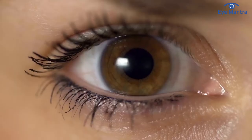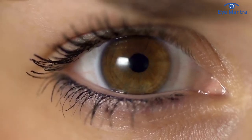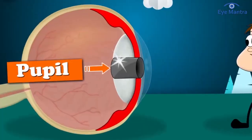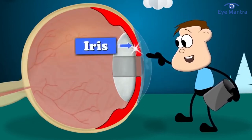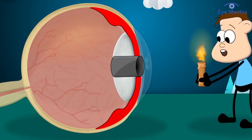Have you ever wondered why your pupil dilates? The pupil is the black and round part of our eye that exists in the center, which reacts or changes its size according to the amount of light entering the eye. The size of your pupil is controlled by tiny muscles in the colored part of the eye called the iris, and the amount of light reaching your eyes.